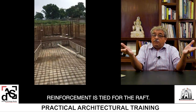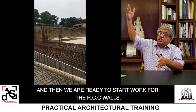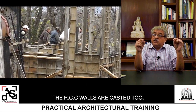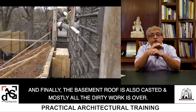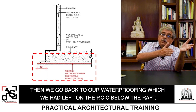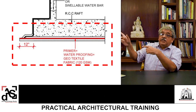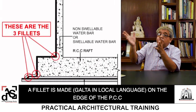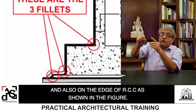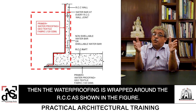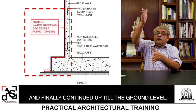Reinforcement is tied for the raft, then casting for the raft is done, and then work starts on the RCC walls. The RCC walls are cast, and finally the basement roof is also cast. We then go back to the waterproofing which was left at the PCC below the raft. A fillet — called Galtha in local language — is made on the edge of the PCC and also on the edge of the RCC as shown in the figure, and waterproofing is continued up till the ground level.